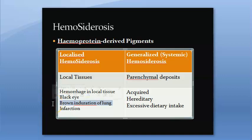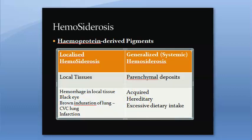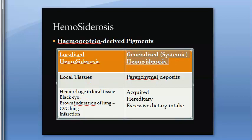Brown induration of lung happens because in left heart failure, the lung cannot send blood back to the heart, leading to chronic venous congestion of the lung. Because of pooling of blood in the lung, there is hemosiderosis, giving rise to brown induration of lung. Also, in infarction, ischemia leads to stasis of blood, and because of heme breakdown and excess iron, there will be hemosiderosis.